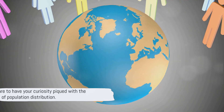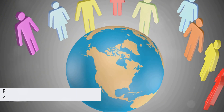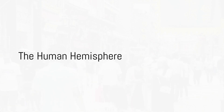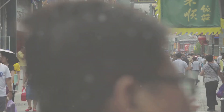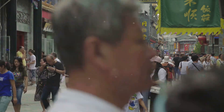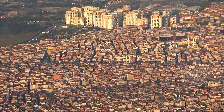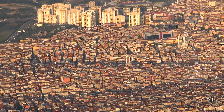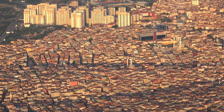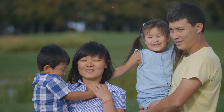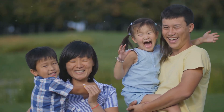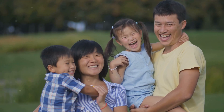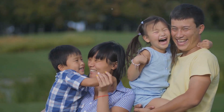As we delve into the world of global population distribution, prepare to have your curiosity piqued. Did you know that over two-thirds of the world's population lives in Asia? A staggering two-thirds. This continent, home to countries like China and India, boasts a population density that far surpasses any other on the globe. The sheer number of individuals living in Asia is a testament to its diverse cultures, landscapes, and opportunities. Yet not all continents share Asia's bustling population density.